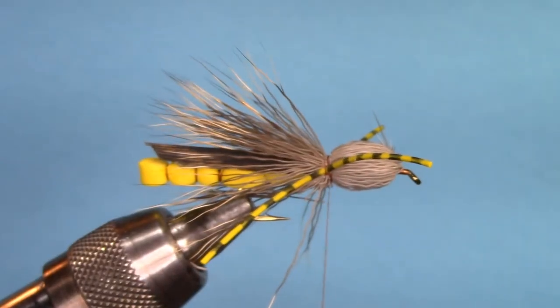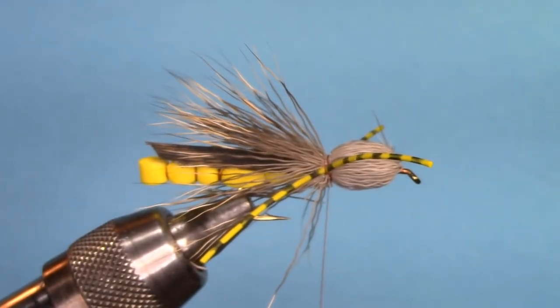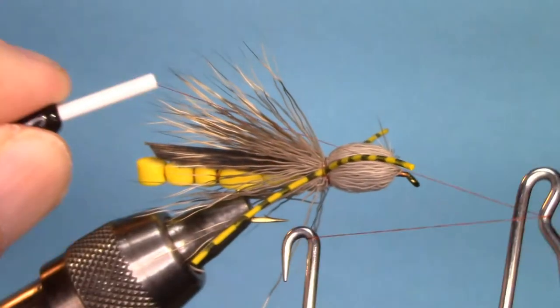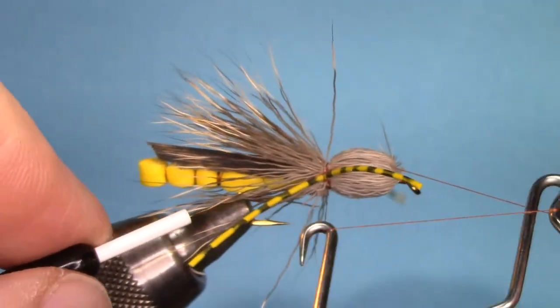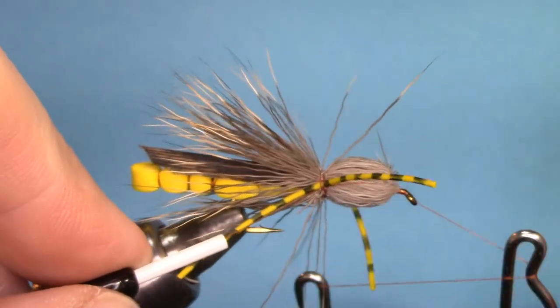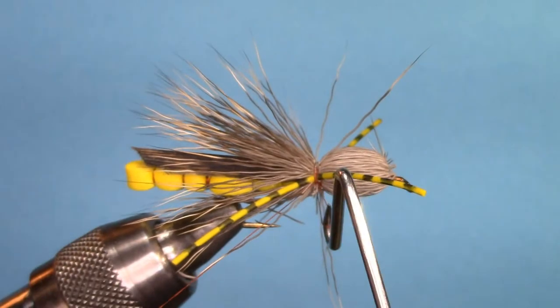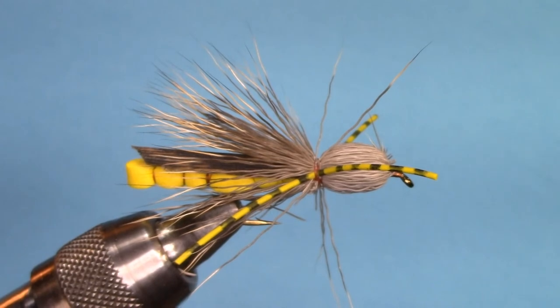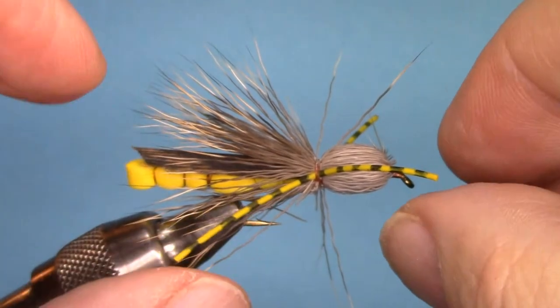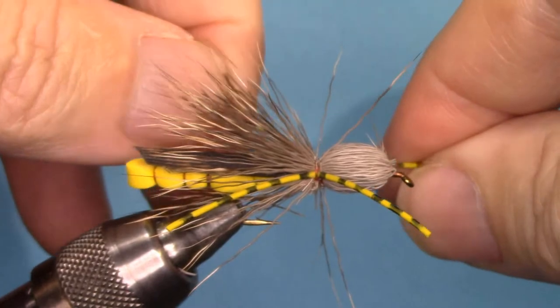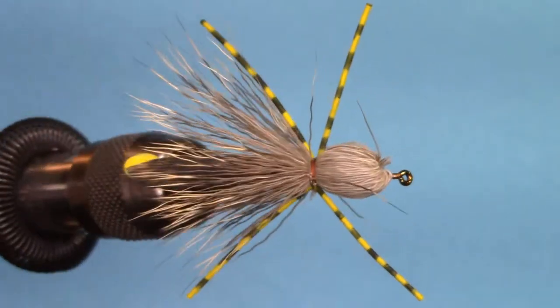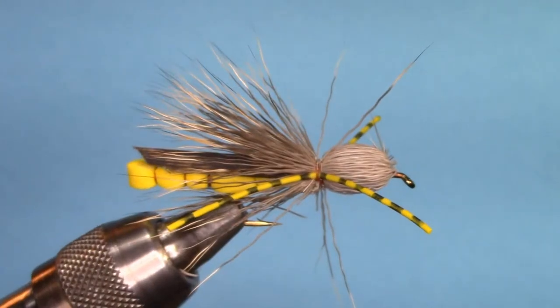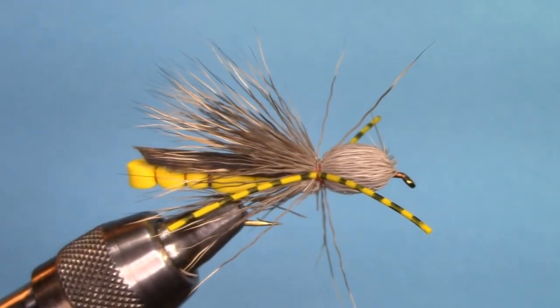What I'll do next is whip finish this right where the legs are. Just reset the legs anytime, and we have our hopper, bullet head hopper with an extended body.